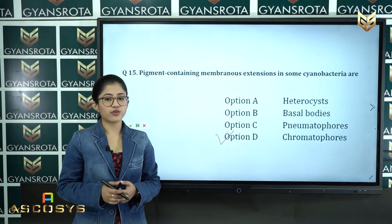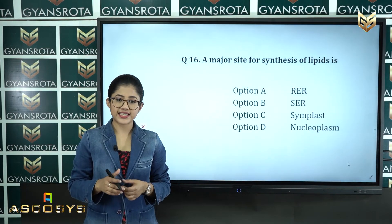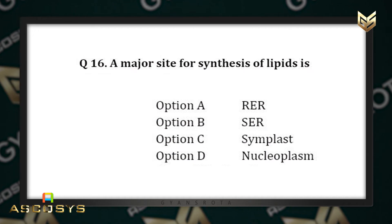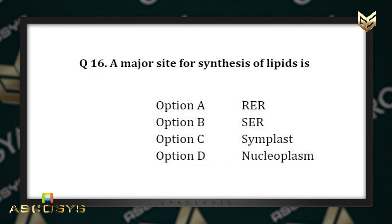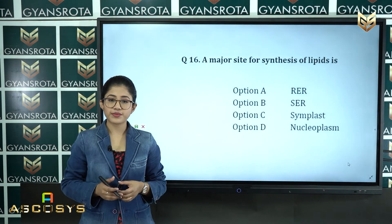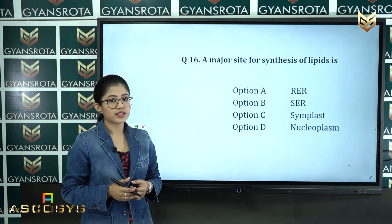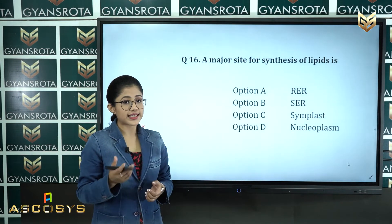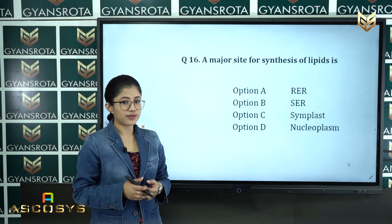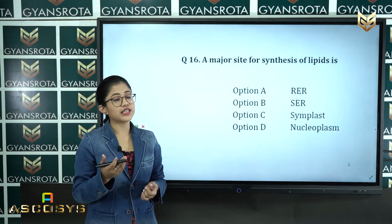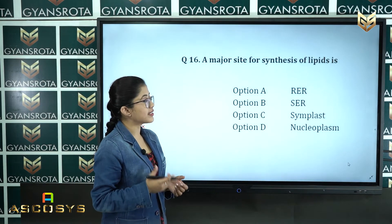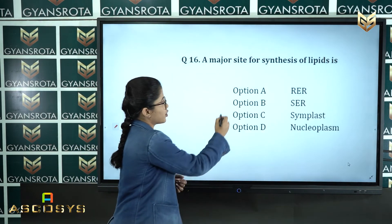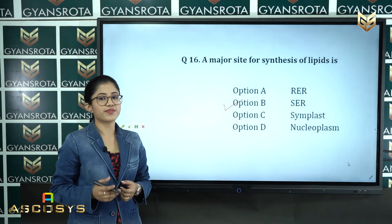Question number sixteen: a major site for synthesis of lipids is — option A: RER (rough endoplasmic reticulum), option B: SER (smooth endoplasmic reticulum), option C: symplast, option D: nucleoplasm. This is from the chapter 'Cell: The Unit of Life.' The synthesis of lipids takes place in the smooth endoplasmic reticulum, so option B is the correct answer.